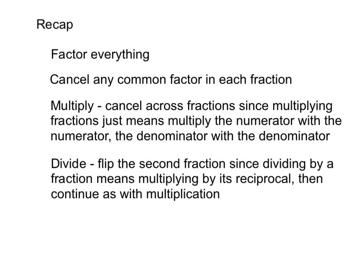So, this is just a recap of what we did in this video — multiplying and dividing rationals, or multiplying and dividing fractions. Our very first step was to factor everything fully, so that you can see what those common terms are. Then you want to cancel any common factors — not common terms, common factors — because you can cancel across fractions when multiplying. When you're dividing, you have to remember to flip the second fraction, because dividing by a fraction means multiplying by its reciprocal. Then you just continue as you did with multiplication. Factor, cancel factors — that's really what we're getting at with rational expressions.